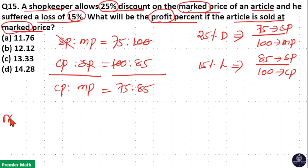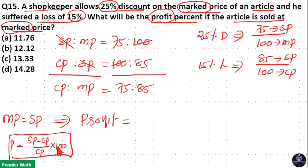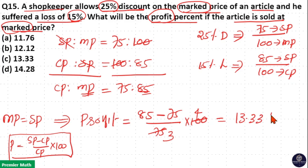So if marked price equals the selling price, we need to find the profit. The profit formula is: (sell price minus cost price) divided by cost price, into 100. Here, marked price is the sell price, so marked price equals 85 and cost price equals 75. So profit equals (85 minus 75) divided by 75, into 100 — which is 10 divided by 75 into 100 — equal to 13.33 percentage.